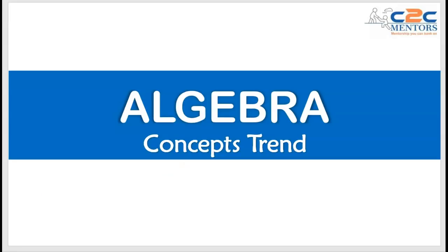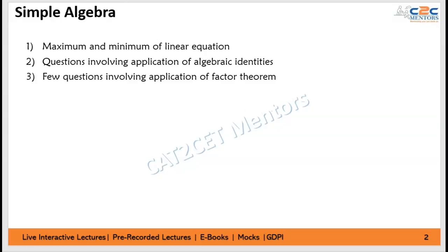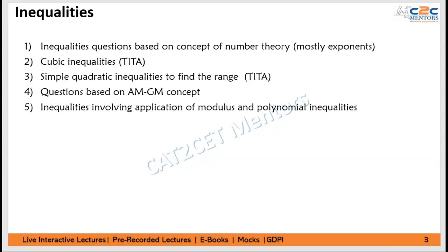Now let's move to Algebra. Simple algebra — three things to cover. You have to solve inequalities involving number theory concepts. Easy questions involve this combo. In inequality there will be a shortcut. AM-GM concept is used every year — it is a favorite for CAT. CAT absolutely loves algebra. Algebra appears more in CAT than in many other exams. CAT is going to be straightforward, conceptual and formula oriented.